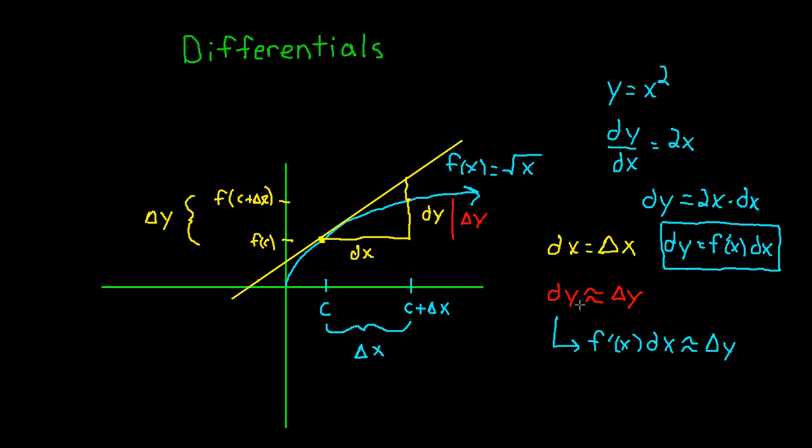In fact, we said that dy approximates delta y, even though that dx, which is this run right here, is actually equal to delta x. So dx equals delta x, but dy approximates delta y. I hope that's obvious from this picture.